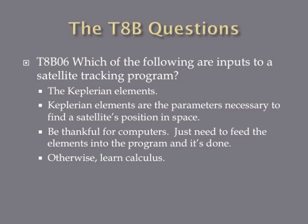Which of the following are inputs to a satellite tracking program? The answer is the Keplerian elements. These are basically the parameters necessary to find a satellite's position in space. We need to be really thankful for computers because now you can just plug these numbers in and it'll show you where the satellite is. Keplerian elements are a complicated thing, but once you plug them in, you'll know where the satellite is.